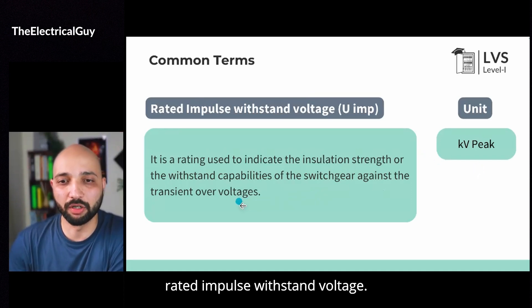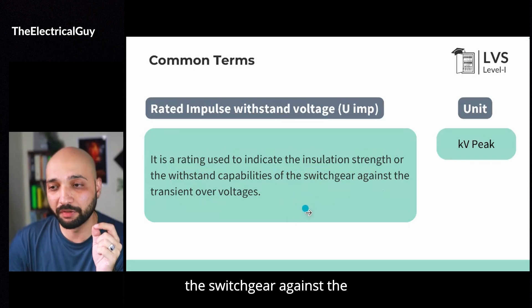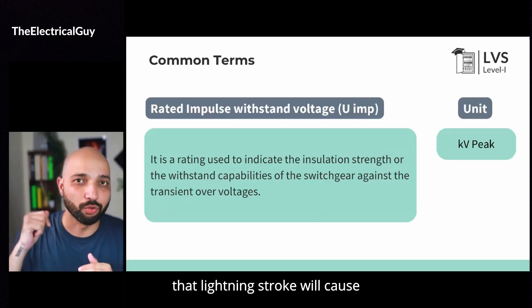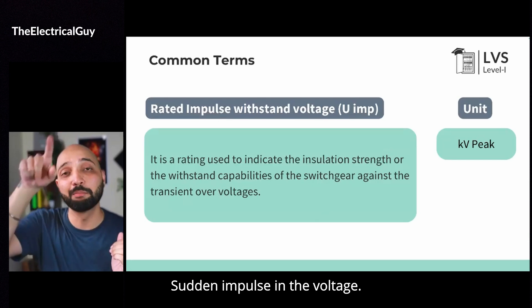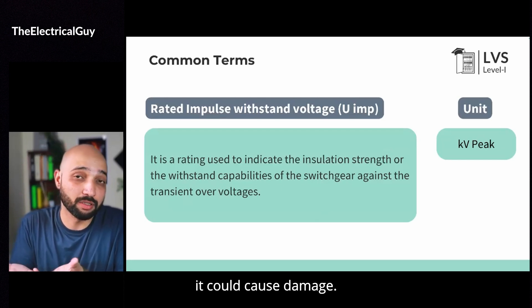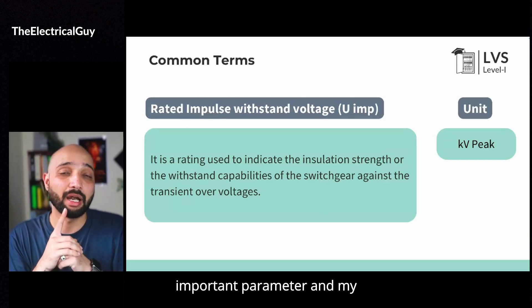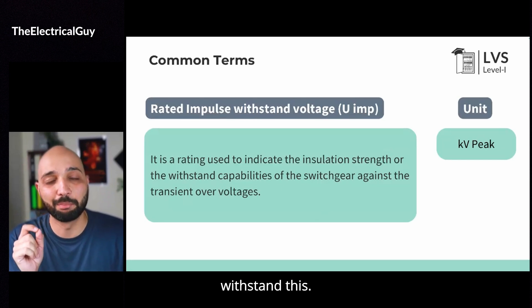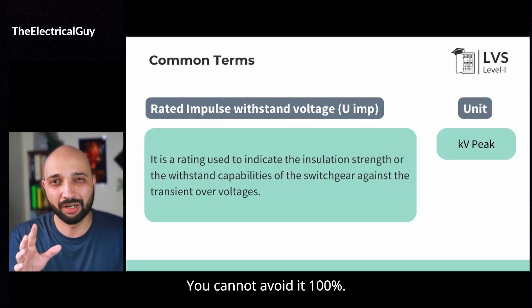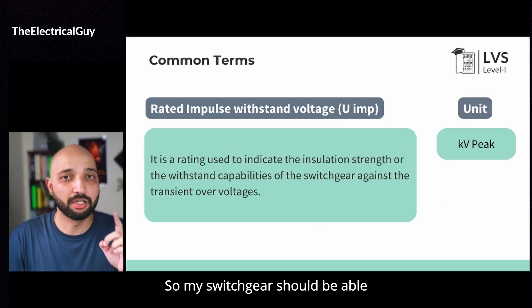Now let us understand what is rated impulse withstand voltage. It is the rating used to indicate the insulation strength or the withstand capabilities of the switchgear against transient overvoltage. There can be a situation — let's say there is a lightning stroke. That lightning stroke will cause a sudden impulse in the system, a sudden impulse in the voltage. My switchgear should withstand that. If my switchgear is not withstanding that, it could cause damage. My switchgear will burn down and that fault will replicate into different systems. So certainly it's a very important parameter and my switchgear should be able to withstand this impulse — these transients that are coming into the system. These are inevitable; they will come for sure. You cannot avoid them 100%, you can surely reduce the amount, but they will come into the system.